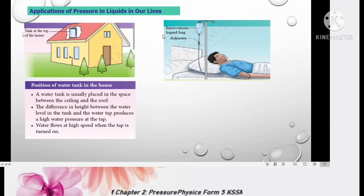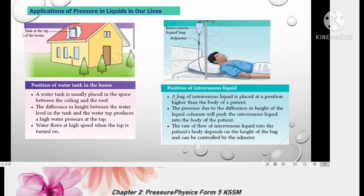The second application is about intravenous liquid bag always hanging at higher place. You can look at the point where the patient body receives the liquid. A bag of intravenous liquid is placed at position higher than the body of a patient for the same reason, increase the depth of liquid. The pressure due to the difference in height of liquid column will push the intravenous liquid into the body of the patient. The rate of flow into patient body depends on the height of bag and can be controlled by adjuster. The higher you place the bottom, the higher the pressure, thus the higher the speed of liquid that flows into the patient body.